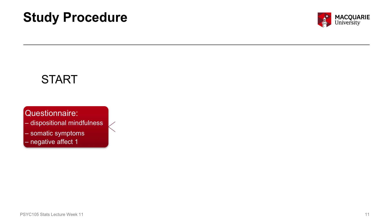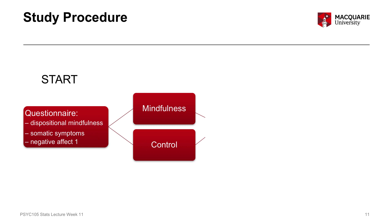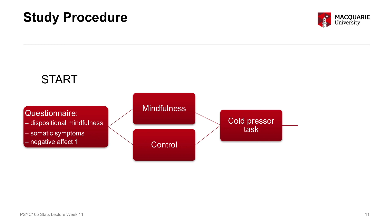The study procedure had four steps. First, participants completed a questionnaire that included dispositional mindfulness, their somatic symptom burden, and their expected negative affect — that is, negative affect 1, their expectation before the task. They were then randomly allocated to either a mindfulness or control group and listened to a 10-minute audio — either a mindfulness audio or a control mind-wandering audio. They then completed the cold presser task, holding their hand in cold water for as long as possible, and finally rated their actual negative affect: how uncomfortable, anxious, or displeased they felt.